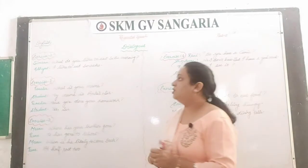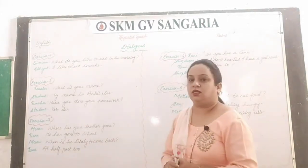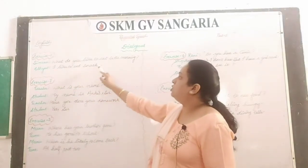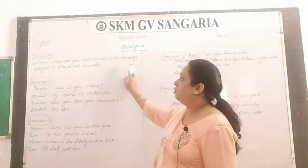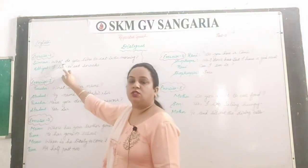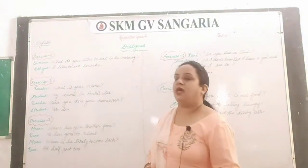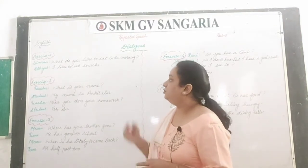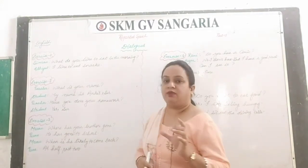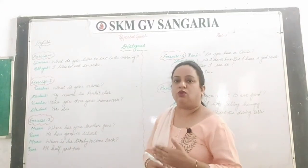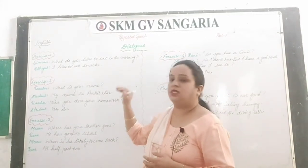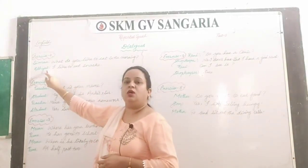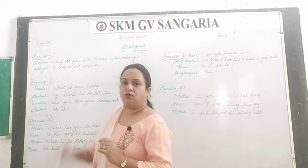The first exercise says: Simran, what do you like to eat in the morning? The second dialogue is of Abhijit: I like to eat snacks. Whatever the two names are given here, it is understood that Simran said to Abhijit — that one is talking to the second one.